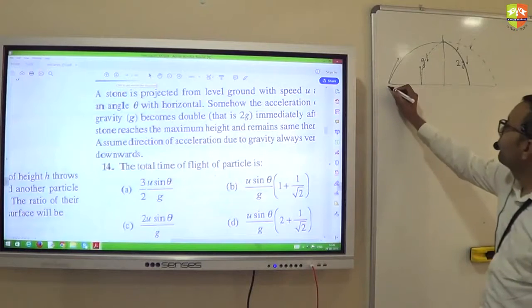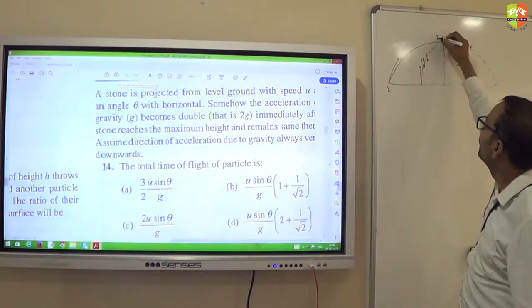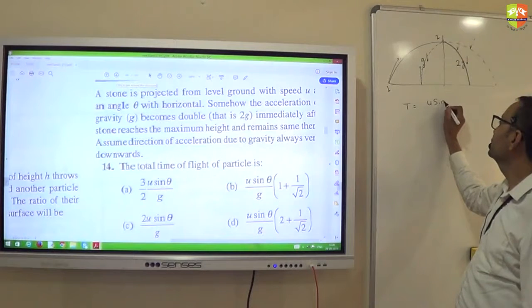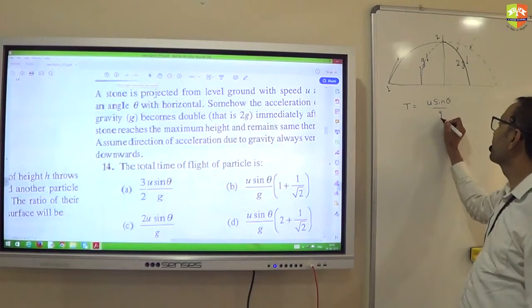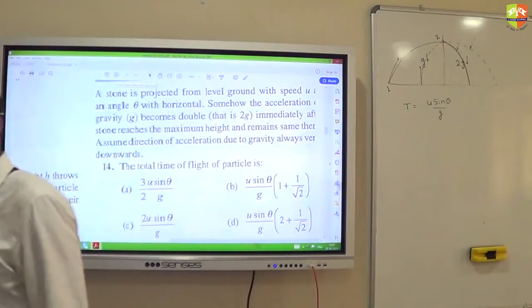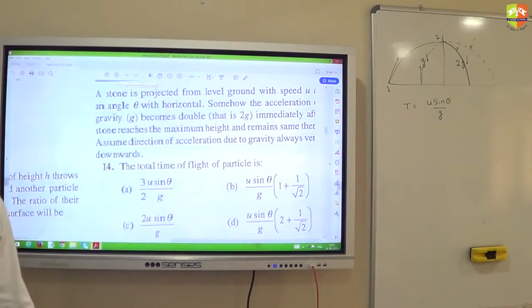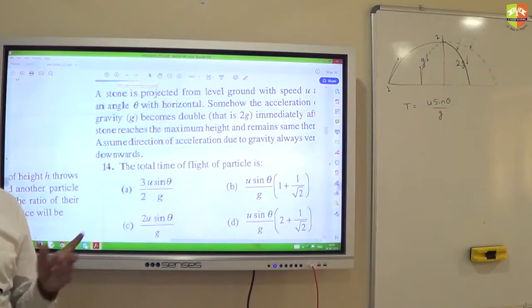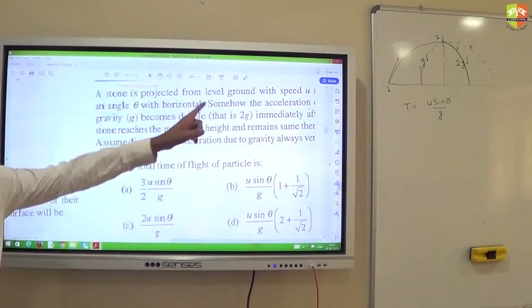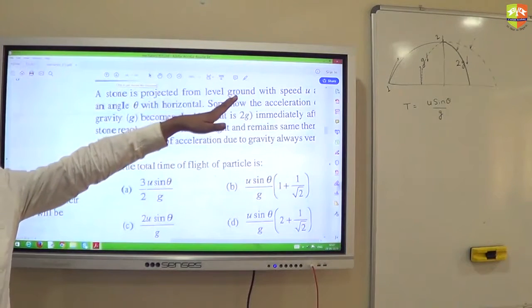Now clearly from point 1 to 2 time taken will be what? U sin theta by G. Yes or no? From 1 to 2 this is half of projectile. You can see time of projectile is U sin theta by G from 1 to 2. All of you agree this?